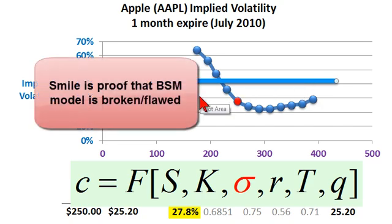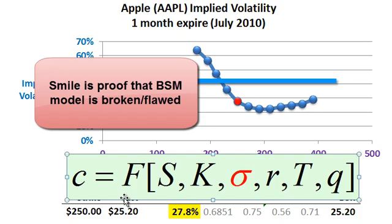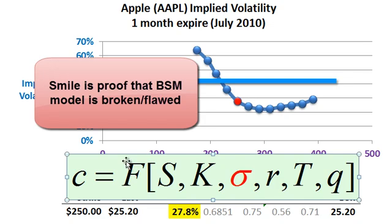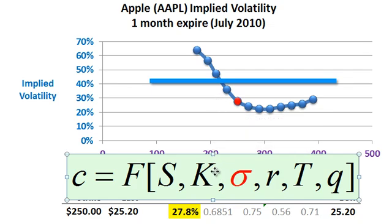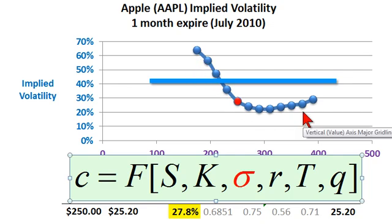Most broadly, the non-constant implied volatility implicates the model, suggesting it's not working exactly to traded prices. That's not really a surprise — the model doesn't include technical factors like liquidity and supply and demand, which can alter the price and therefore the implied volatility. The volatility smile is basically telling us that the model is not perfectly up to the job of pricing options correctly.